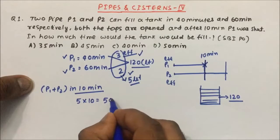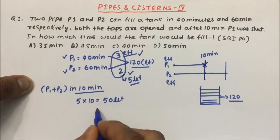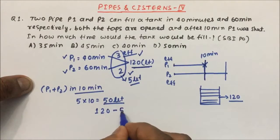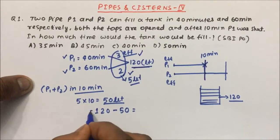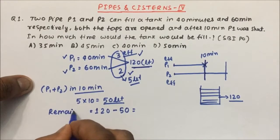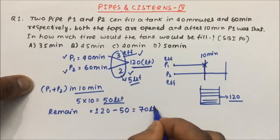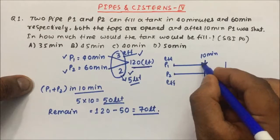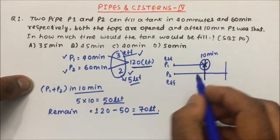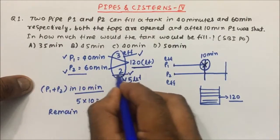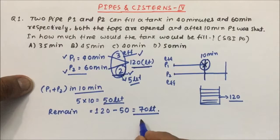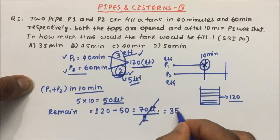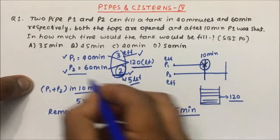In one minute they fill 5 liters, so in 10 minutes P1 plus P2 will fill 50 liters. Out of the total capacity of 120 liters, 50 liters is filled in the first 10 minutes. The remaining tank to fill is 70 liters. This 70 liters will be filled by P2 alone, since P1 is closed. The efficiency of P2 is 2 liters per minute, so P2 will take 35 minutes to fill 70 liters.